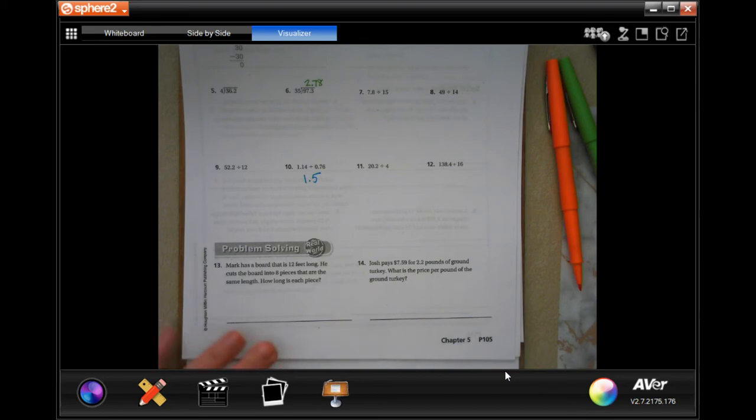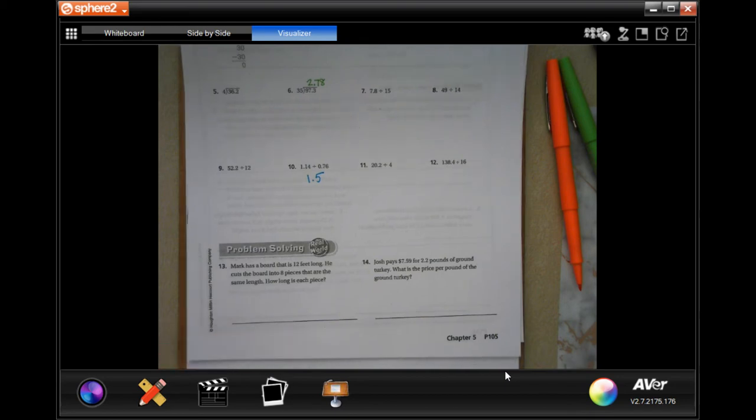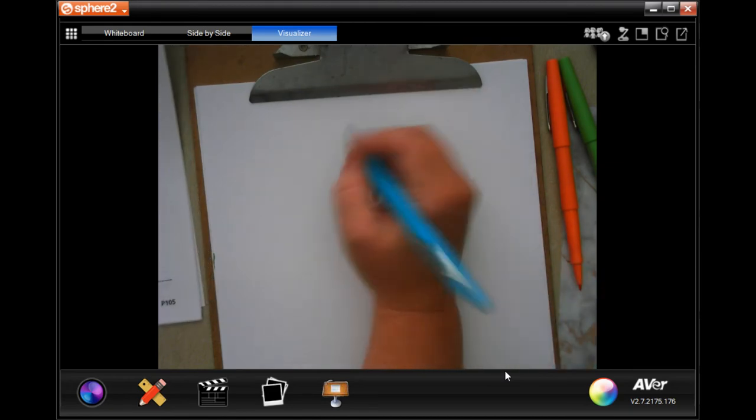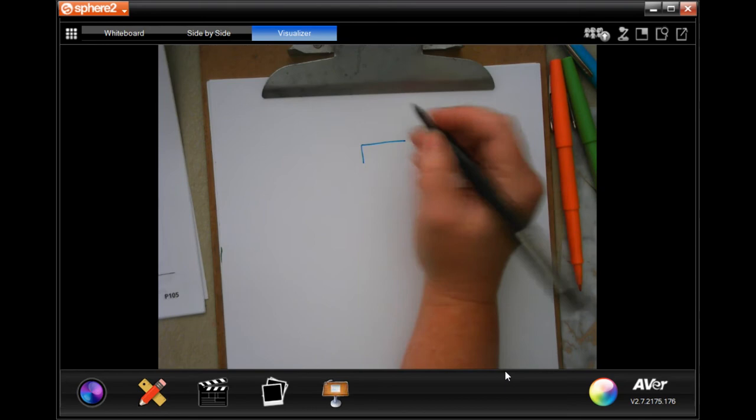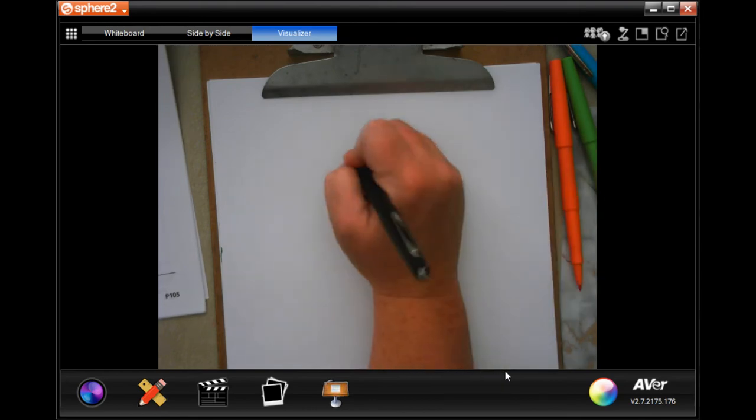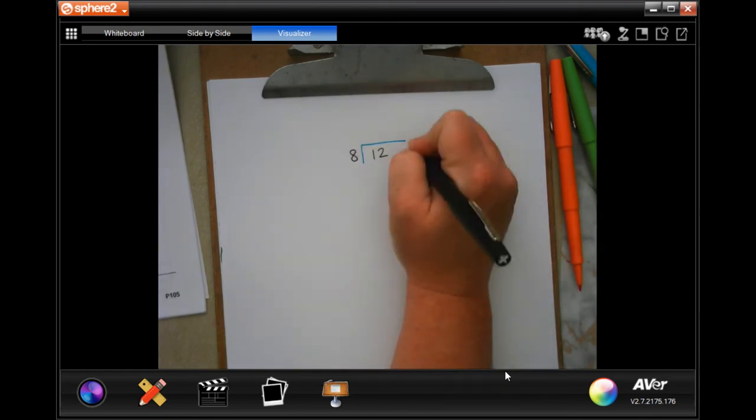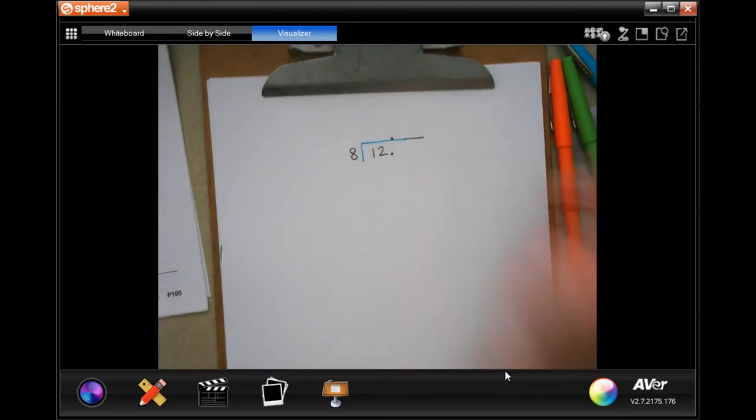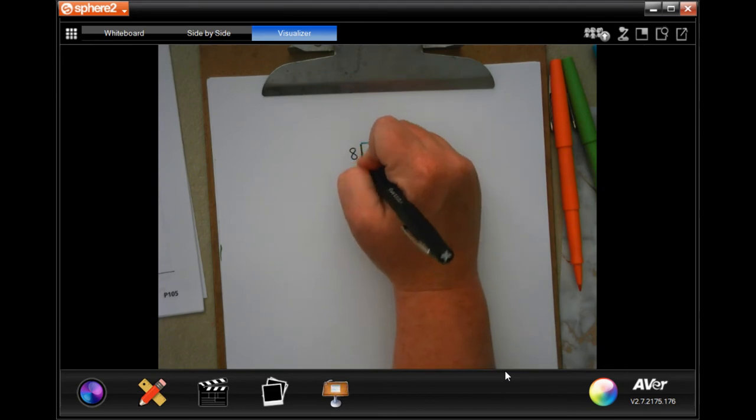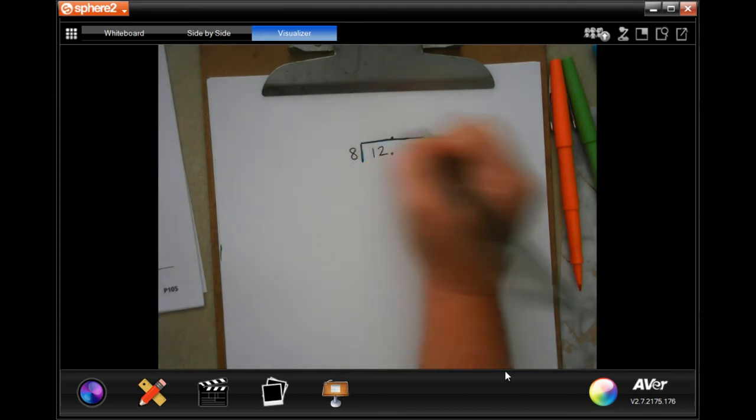We're going to go to number 13. Mark has a board that is 12 feet long. He cuts the board into eight pieces that are the same length. How long is each piece? So he has a 12 foot board. And he puts them into eight pieces. I'm going to take a wild guess and say I'm going to have to add a zero there because eight doesn't go into 12 evenly. So I'm going to put my decimal in.